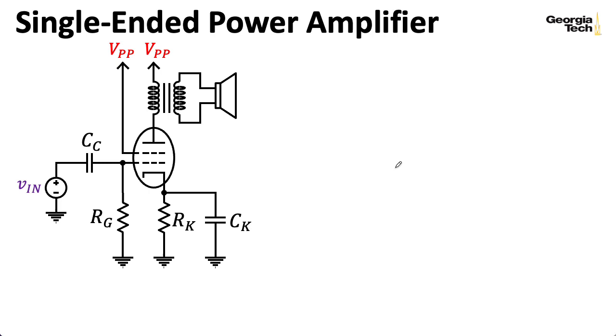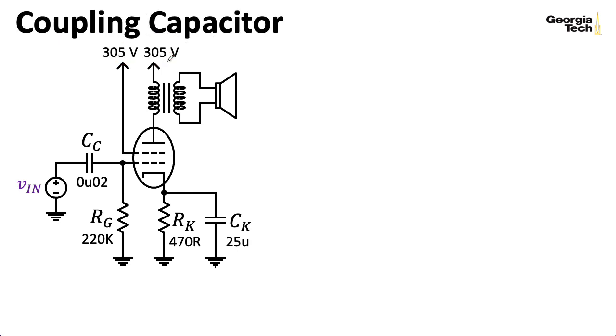Writing in the specific values for the Fender Champ, I'm using this U here to represent micro and I'm putting the mu in the middle here to represent where the dot goes. So this is 0.02 microfarads. I'm using an R here to represent ohms. So we have a 220k grid leak resistor, 470 ohm cathode resistance, 25 microfarad cathode capacitance, and the coupling capacitance is 0.02 microfarad. And from the schematic, this power supply is 305 volts.